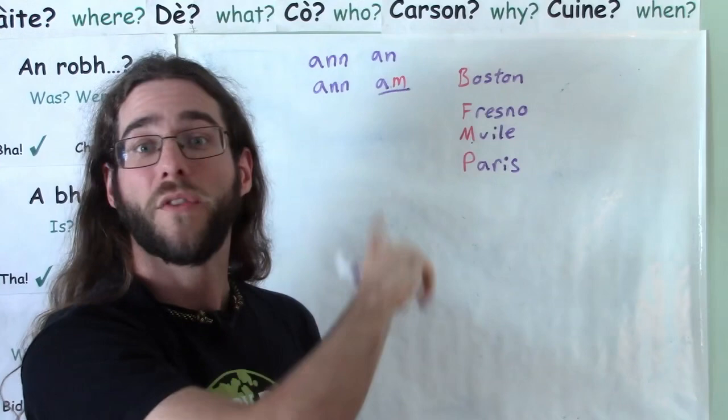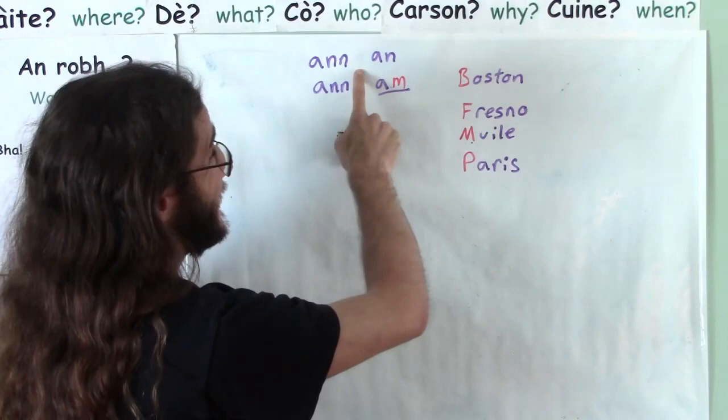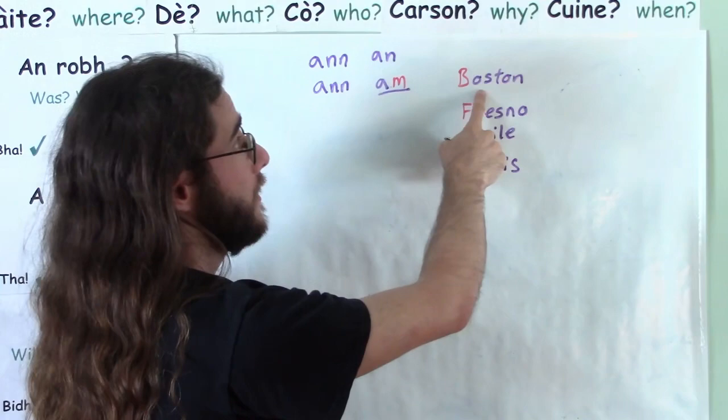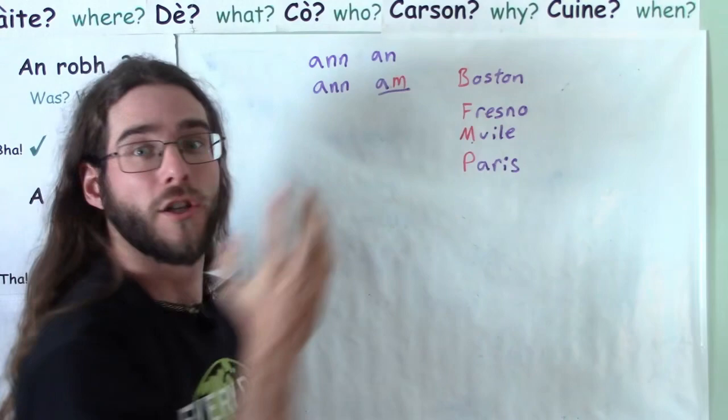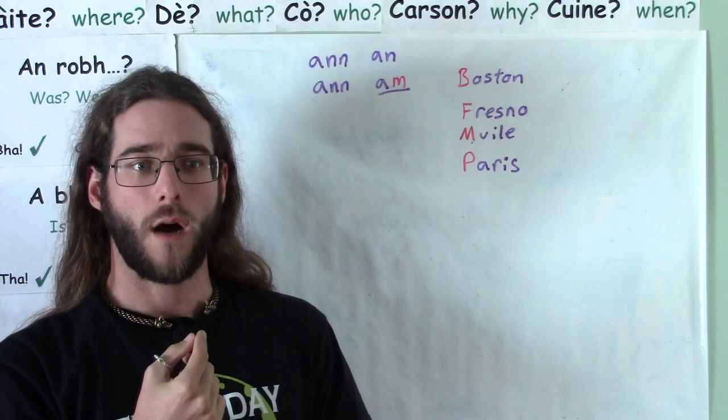Now why does this happen? Again, there's a short, clear explanation for it. An changes to am because saying am Boston is actually a lot smoother than saying an Boston. Try it with me for a second. Really bring your awareness to your mouth and how your tongue is moving and say an Boston. An Boston. Remember that's the incorrect way of saying it.